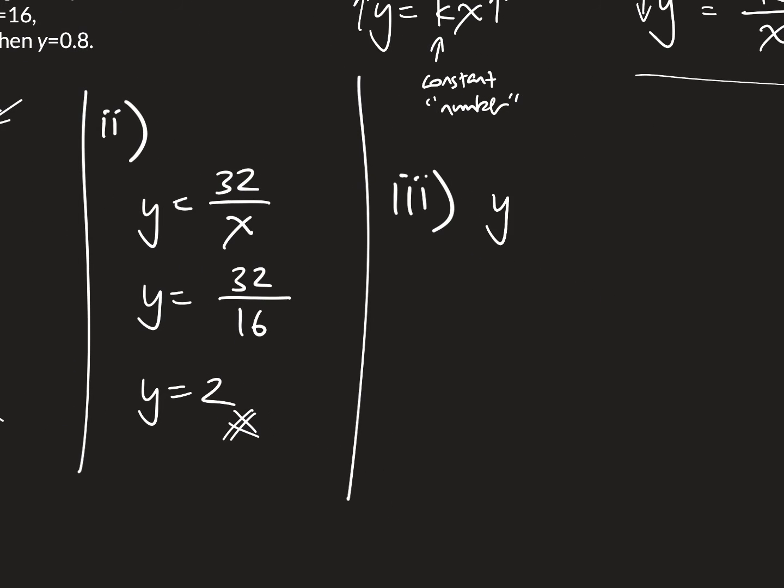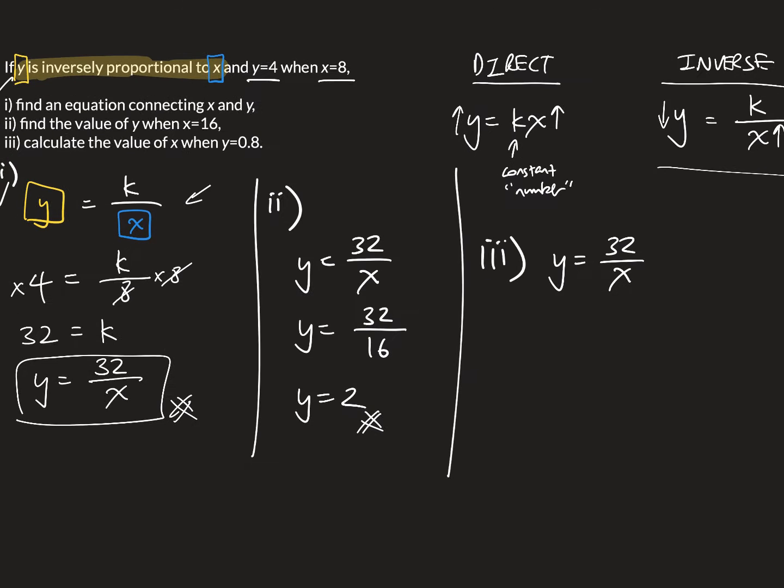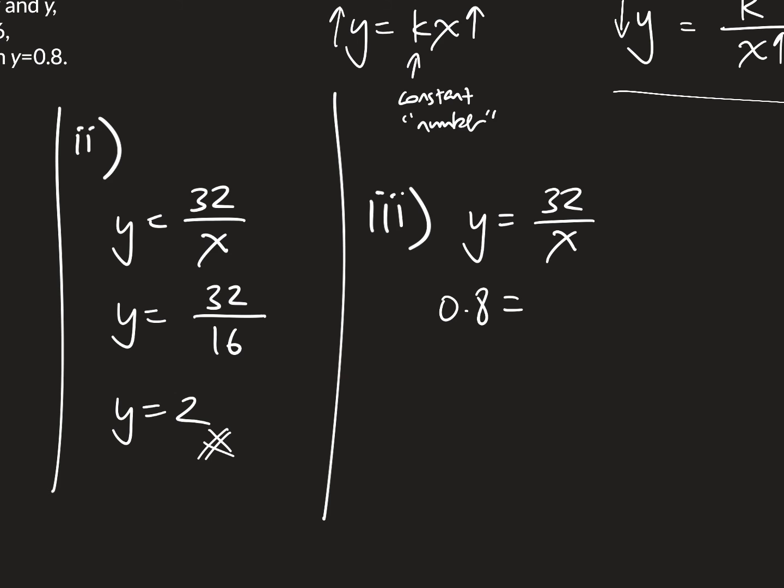The value of x when y equals to 0.8. So once again, we start with this relationship. y is 0.8. And so we want to find x. So to do this, x is in the denominator. So let's just multiply both sides by x.